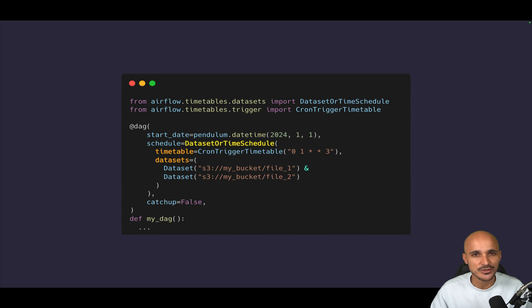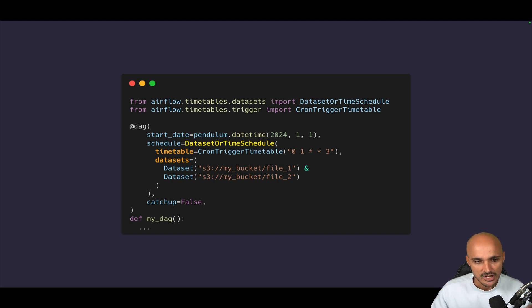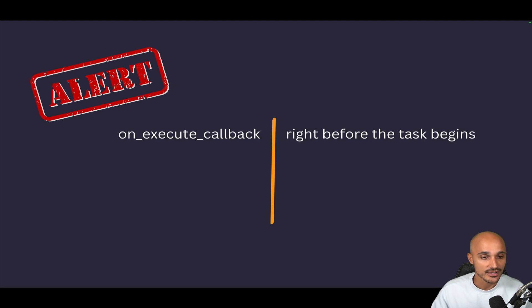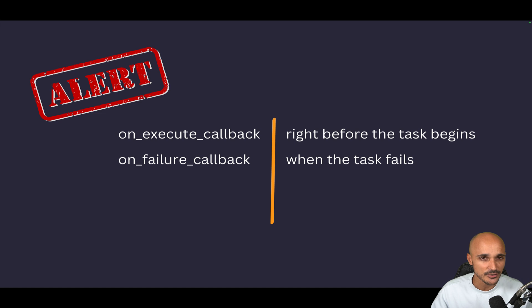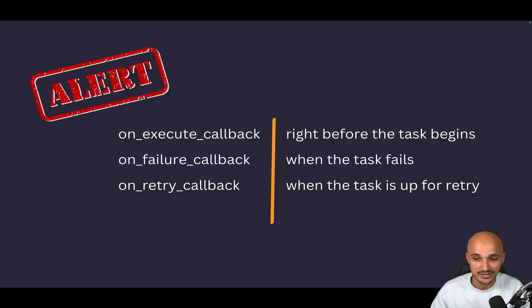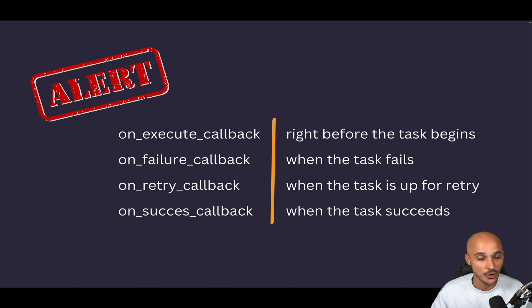Now let me show you two additional new features in 2.9. First, remember that in Airflow you have callbacks that are called whenever something happens to a task: on_execute_callback (called right before the task begins), on_failure_callback (when the task fails), on_retry_callback (when the task is up for retry), and on_success_callback (when a task succeeds). But one callback was missing: the on_skipped_callback.